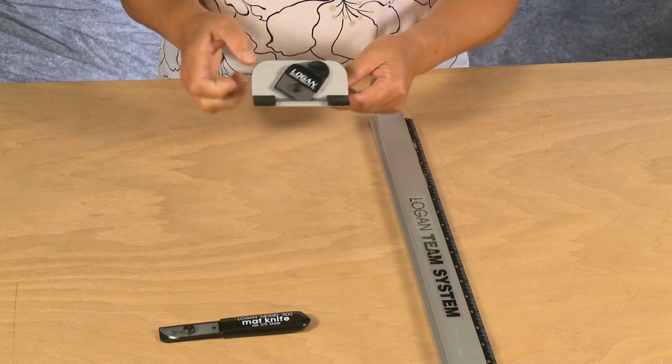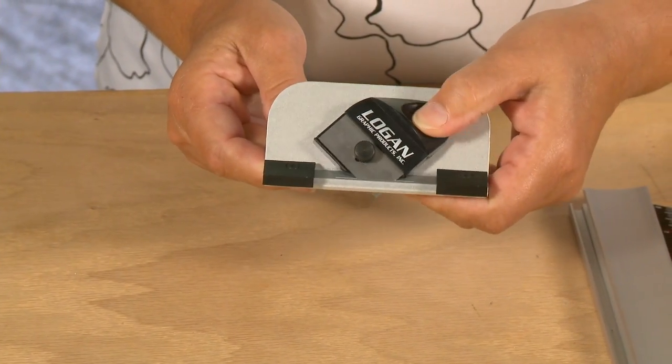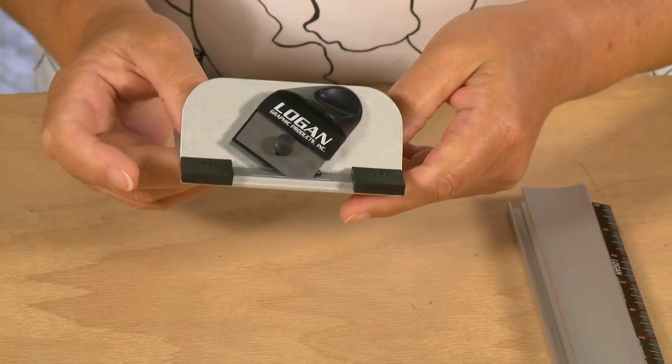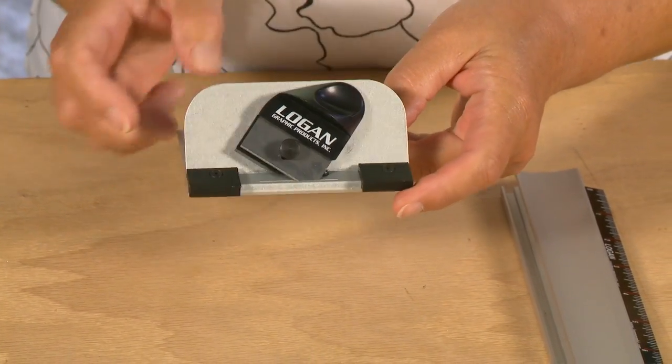Also included is a push style bevel cutting head with retractable blade holder, start and stop indicator, and nylon guides that allow it to hook to the side of the straight edge.